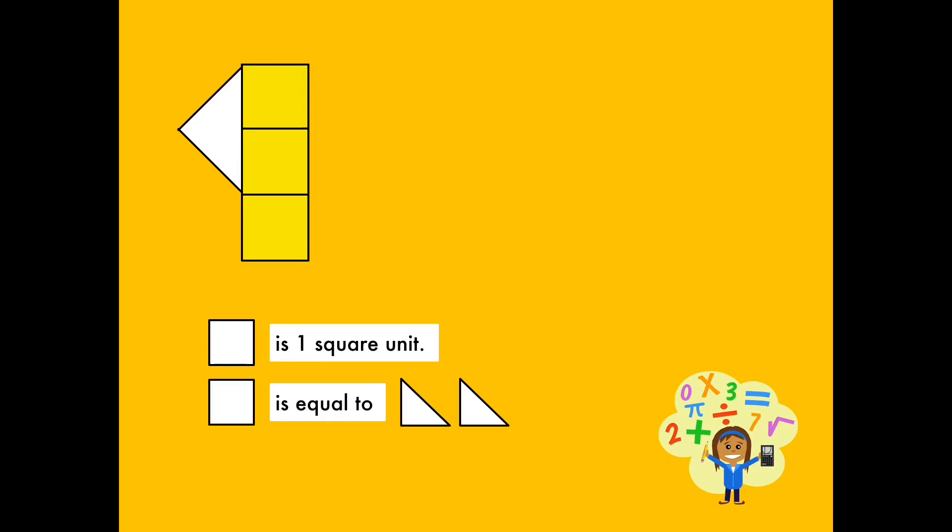We can cover the remaining parts of the figure using the half-squares. We can say that the figure is covered by one, two, three, four. Four square units. The area of the figure is four square units.